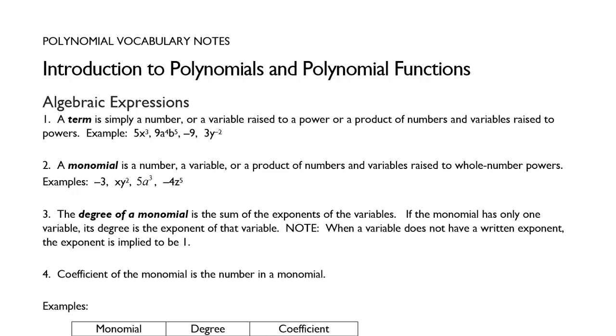Notice that the sign in front of them could be positive or negative. If it's the leading term, the first one in a row, usually we won't write the plus sign. Let's look at part 2. A monomial is a number, a variable, or a product of numbers and variables raised to a whole number power.